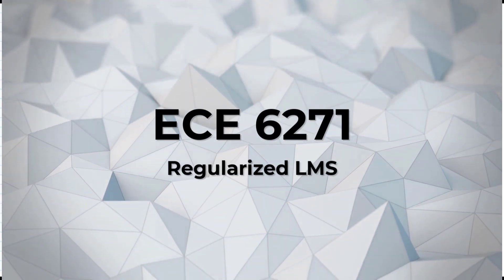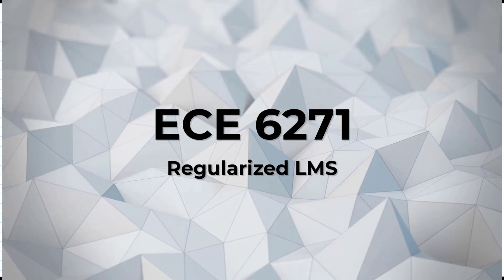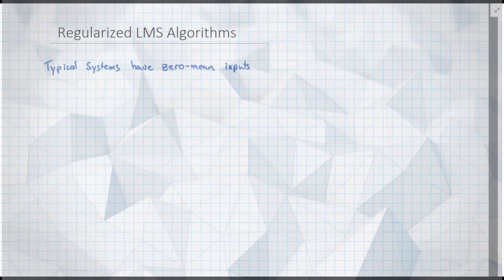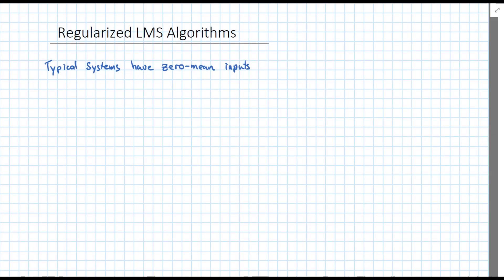This lecture will talk about a problem that shows up very much in actual systems. Typical systems have zero mean inputs, and this shouldn't be a surprise as we've typically assumed zero mean signals for everything that we've done so far. But let's look at where these signals actually come from, and we'll see that there's a little bit of a difference.